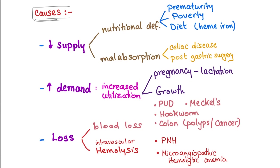Decreased supply includes nutritional deficiency — such as prematurity, poverty, old age. Strict vegans are at increased risk because there are two types of iron: heme iron from meat products and non-heme iron from vegetables. Heme iron is better absorbed than non-heme, so strict vegans eating only vegetables have increased risk of iron deficiency anemia.